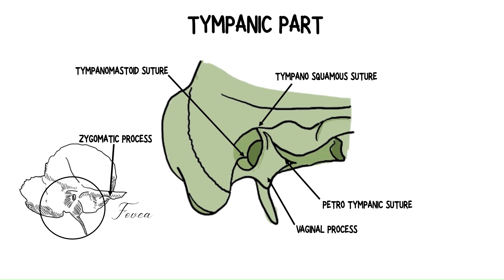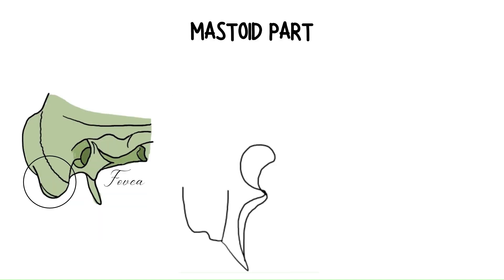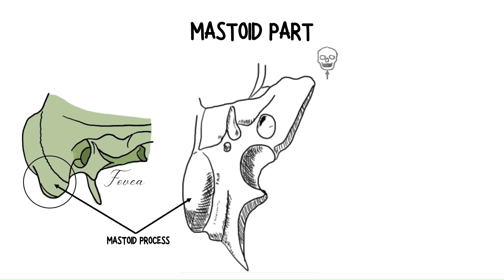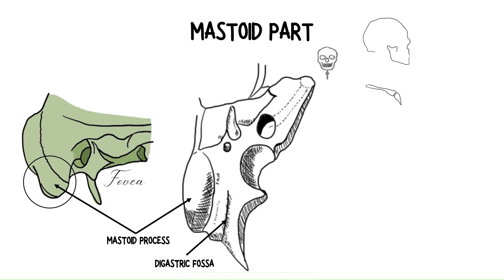The vaginal process is a projecting lamina of bone on the inferior surface of the petrous portion of the temporal bone that is continuous with the tympanic plate and surrounds the root of the styloid process. The mastoid part of the temporal bone is its posterior component. The inferior conical projection of the mastoid part is called the mastoid process, which is palpable just posterior to the earlobe. The medial extracranial surface of the mastoid process contains a deep groove called the digastric fossa, or mastoid notch, which originates the posterior belly of the digastric muscle. In addition, it contains air-filled spaces called the mastoid air cells.